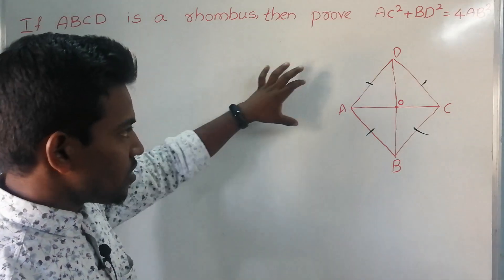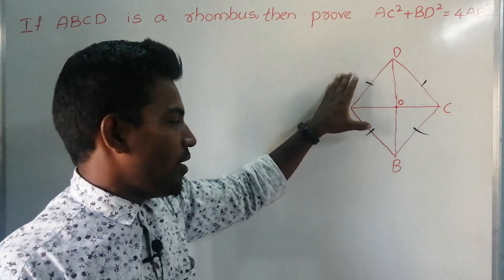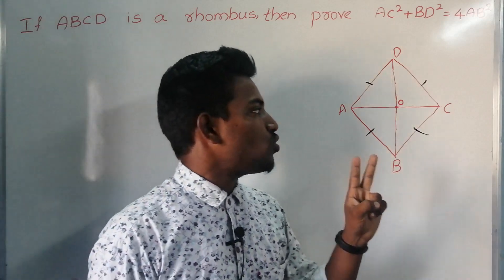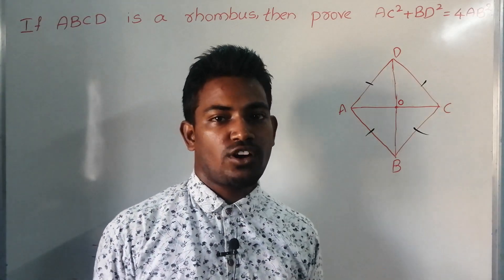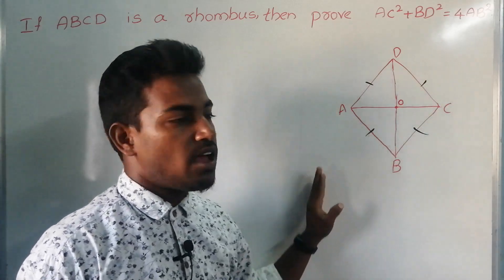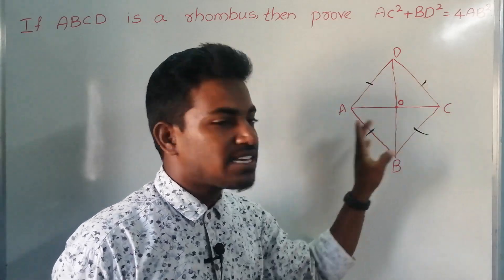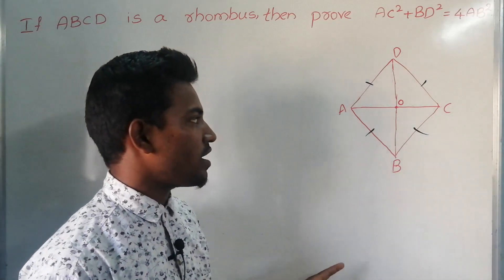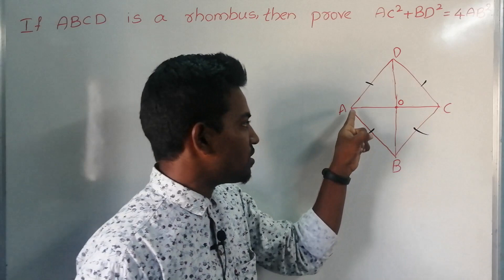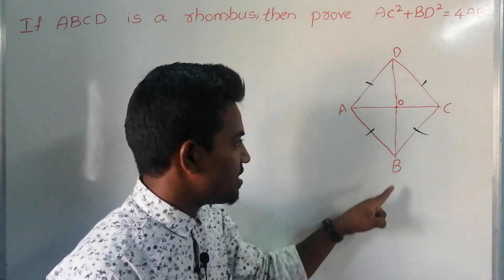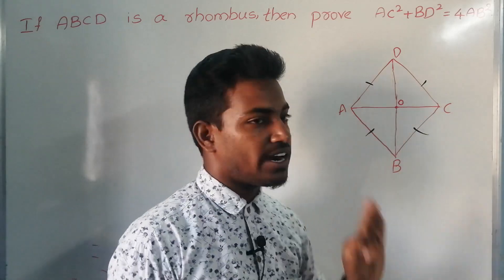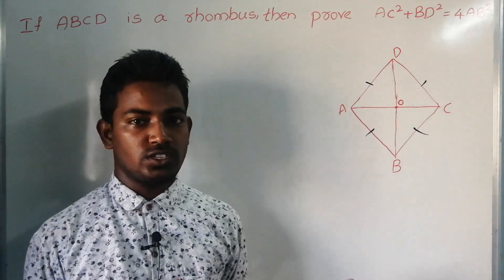Before we start, let us recall the properties of a rhombus. There are two major properties. The first one is all sides of a rhombus are equal. The second property is that the diagonals are not equal in length — this is one diagonal, and this is another diagonal, and their lengths are not equal.